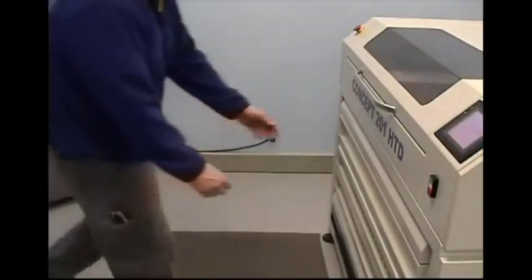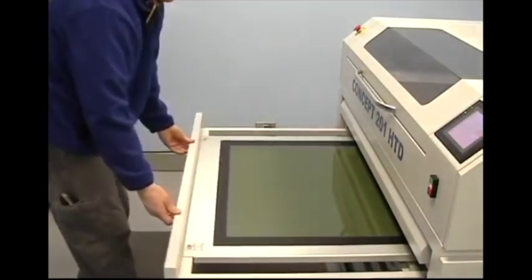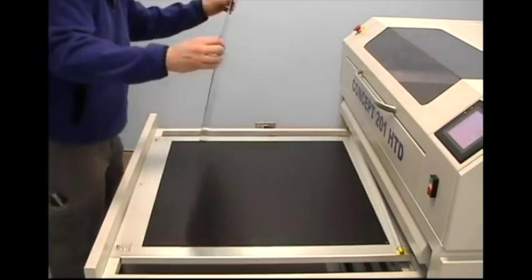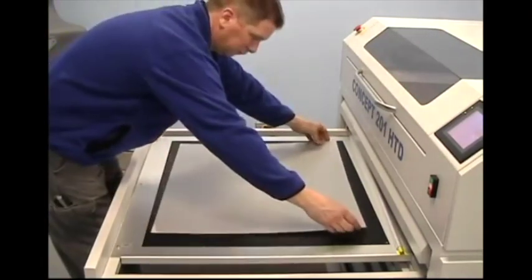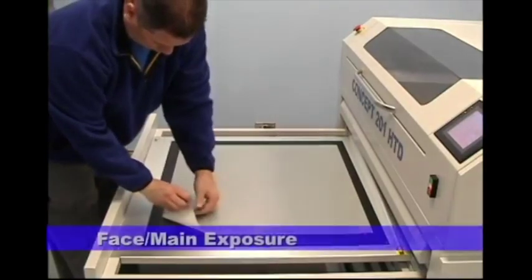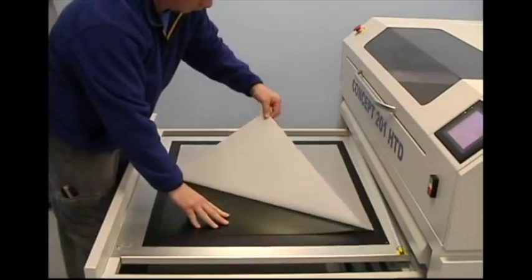In this particular unit, the plate must then be flipped over for the face or main exposure. Other units may allow you to expose the plate from both sides. Before applying the film negatives, the protective cover sheet must be removed.